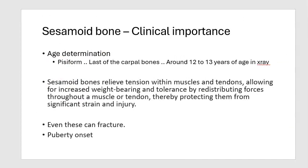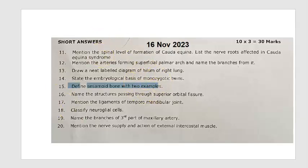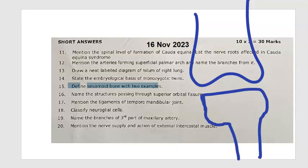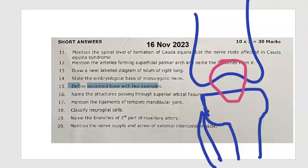You're done with the sesamoid bone question. If more marks are required, draw a knee joint diagram: draw the femur, tibia like a T, fibula beside it, and then draw the patella in front. Label this as the sesamoid bone — the patella. That will make the examiner happy to give you marks.